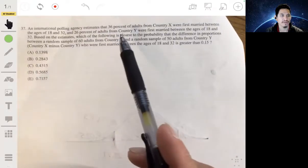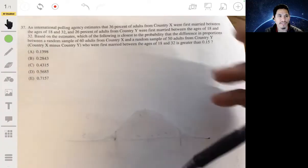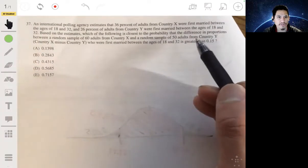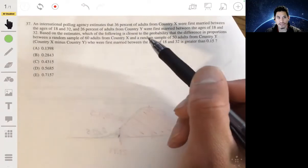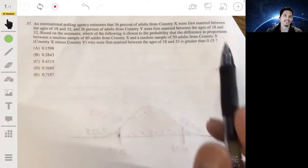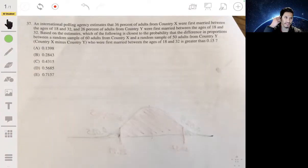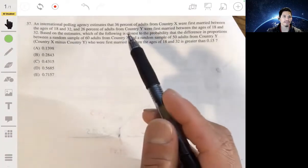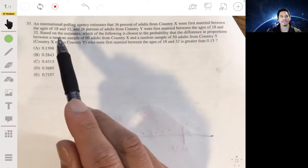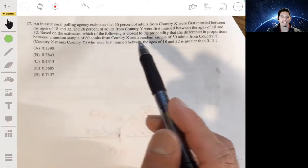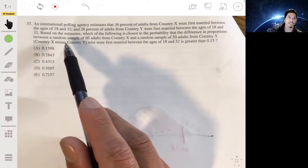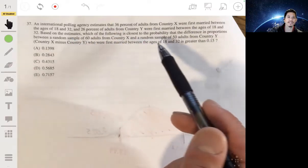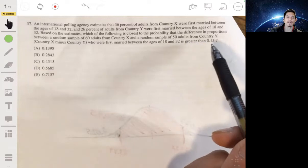All right, in 37, we have an international polling agency that estimates that 36% of adults from country X were first married between the ages of 18 and 32, and 26% of adults from country Y were first married between the ages of 18 and 32.